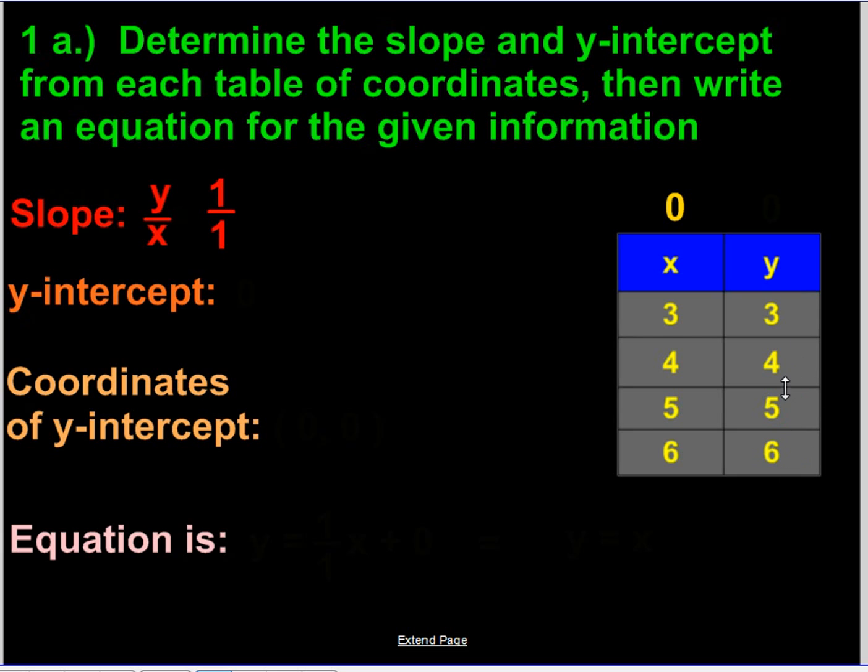So since they've also moved by 1 from each, we're going to move by 1. So we go 2-1-0. Our y-intercept is going to be 0, and the coordinates of the y-intercept are going to be 0-0.